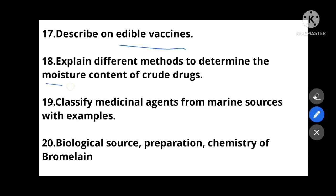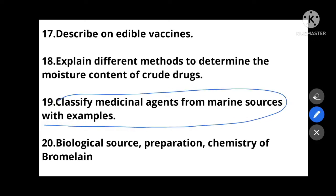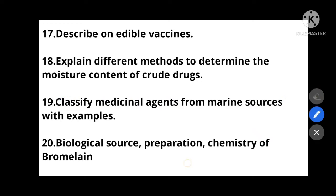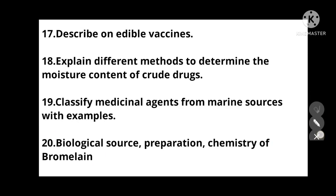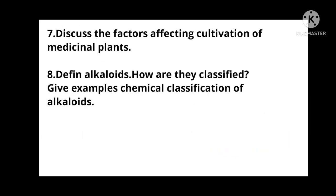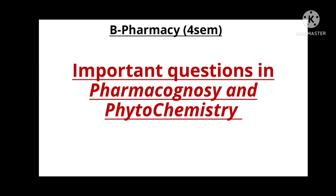Classify medicinal agents from marine sources with examples. The last five-mark question: Biological source, preparation, and chemistry of bromelain — very important, this question may come this time. My dear brothers and sisters, these are very important 10-mark and 5-mark questions repeatedly asked in examination. Just practice these along with some two-mark questions. Thank you, Assalamu alaikum.